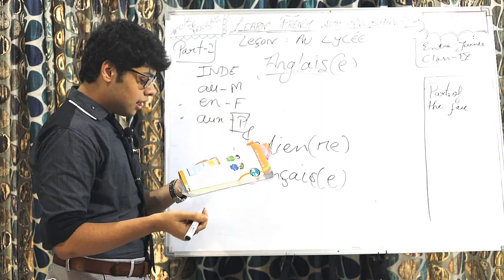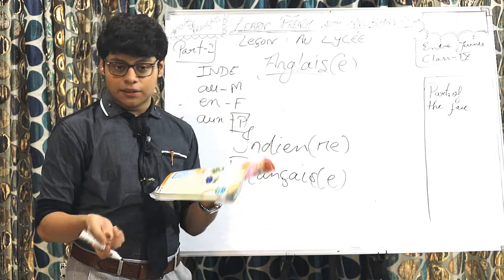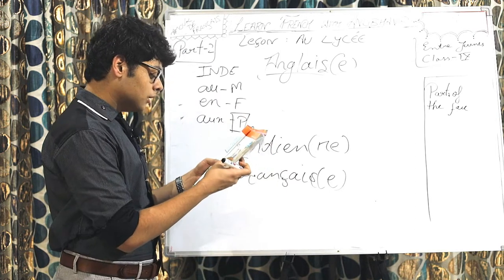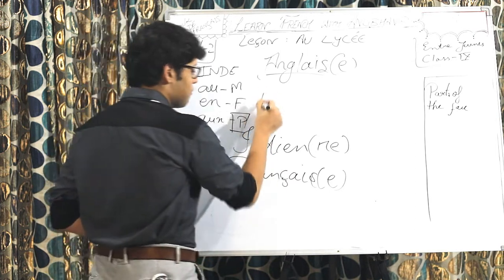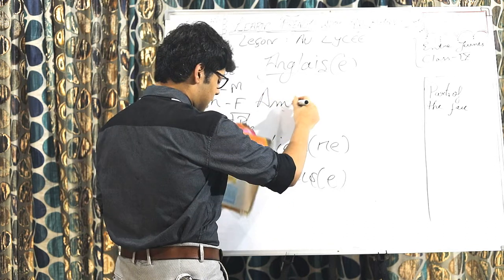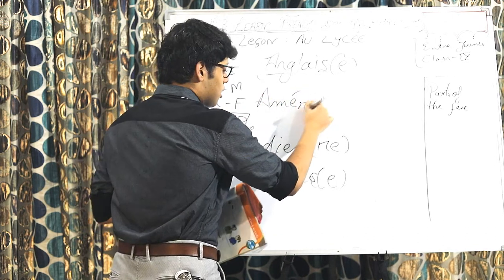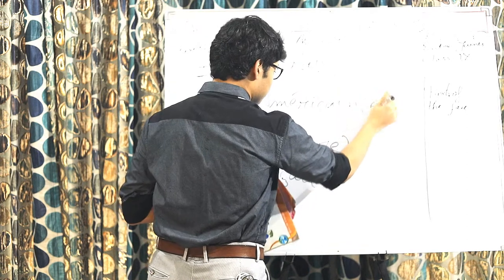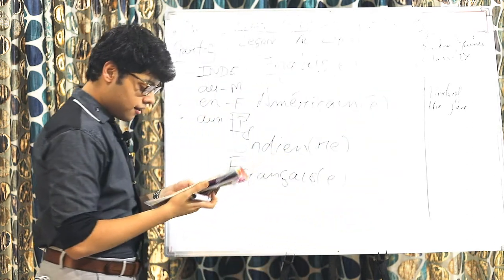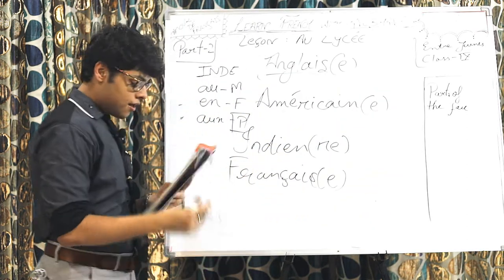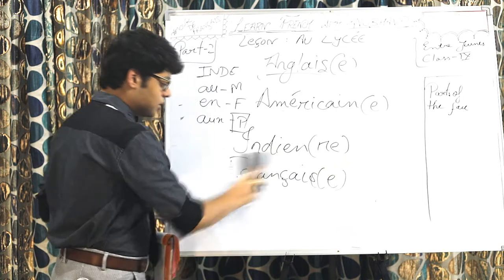And the last one is the plural country. Plutal, United States. Oze tats uni, is what we say. So, the nationality, American, is written like this. American. And with an E, it becomes female.